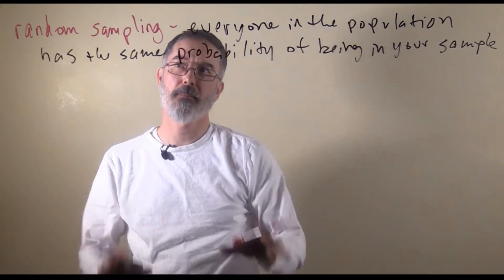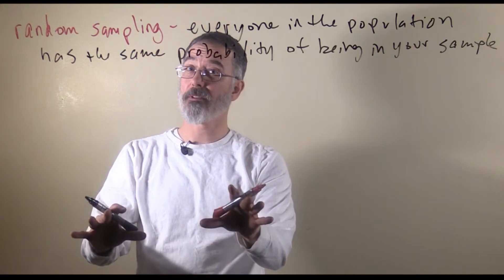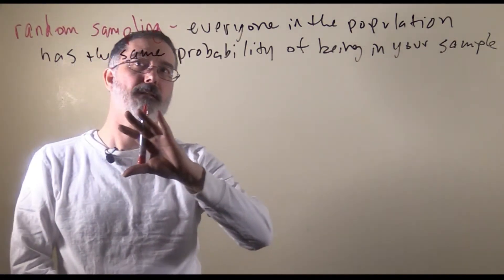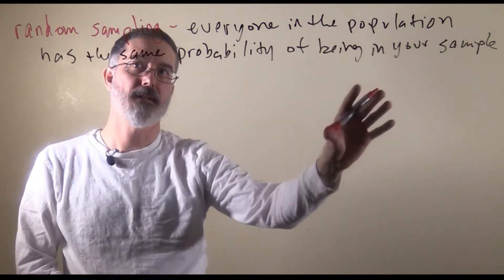In research, there is a concept that is kind of like random sampling, but a little bit different. It is important that you know the distinction. Random sampling is if everybody in the population has an equal chance of being in your sample.